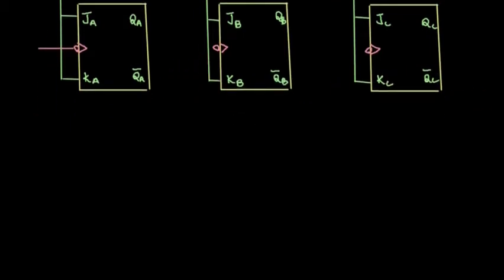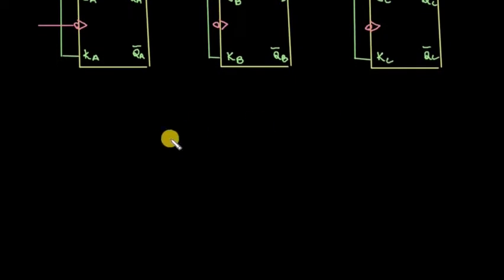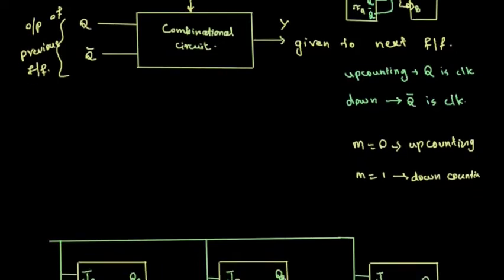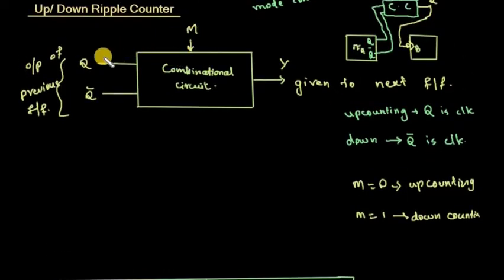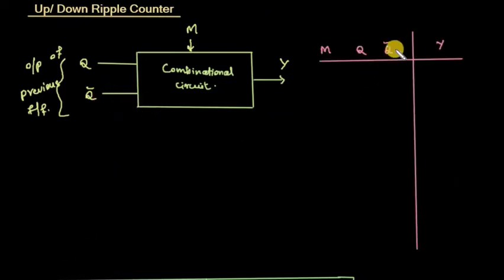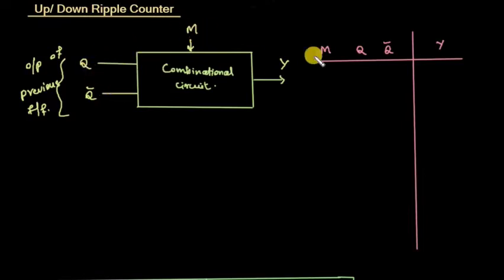Let's take a truth table. We have three inputs: M, Q, and Q-bar. Two raised to three gives eight combinations possible.